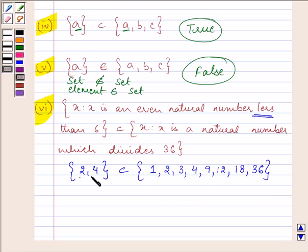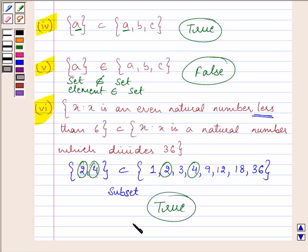So that means, do 2 and 4 belong to this set? Is {2, 4} a subset of this set? Let this sign mean subset. So this comes out to be a true statement because both these elements are present in this set also. So hence, we will write down that this is a true statement.